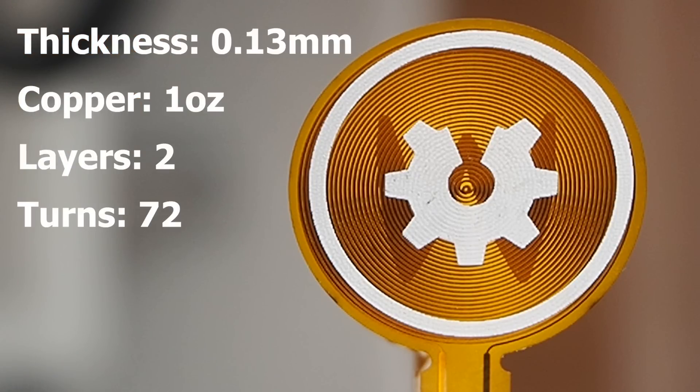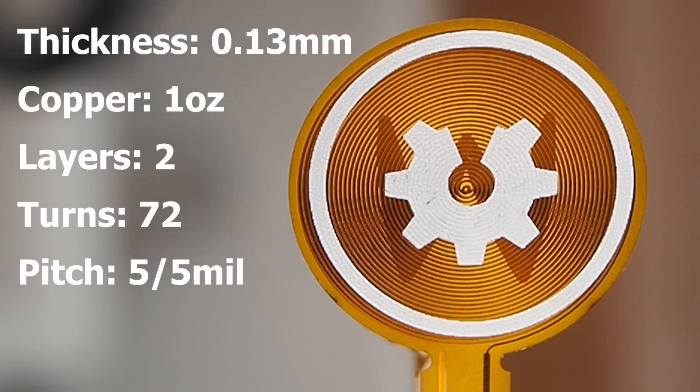This two layer coil has a total of 72 turns with a pitch of 5x5mm that all fit inside a diameter of 2cm.